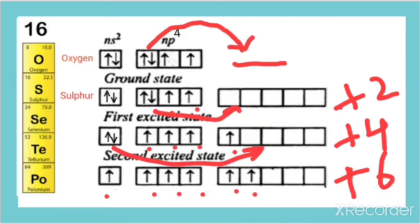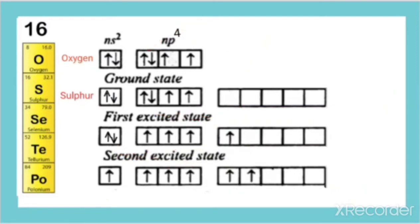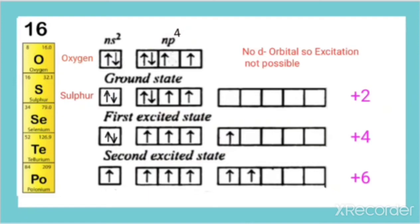So, in the case of Oxygen, because there is no vacant d-orbital for the excitation of electrons, its oxidation state is limited to -2 and -1, and it shows +2 oxidation state only with Fluorine because Fluorine is more electronegative than Oxygen. For Sulphur and others, excitation to d-orbitals is possible, so they can show +2, +4, and +6 oxidation states. But for Oxygen, no d-orbital means excitation is not possible.